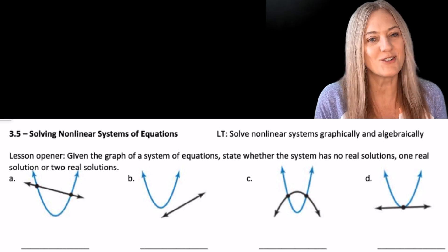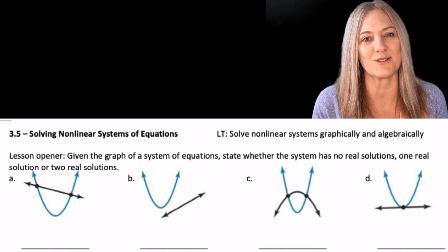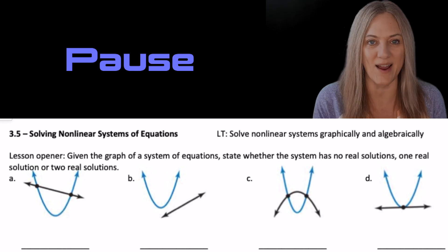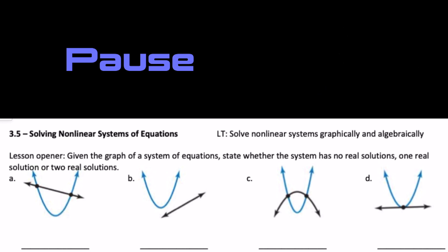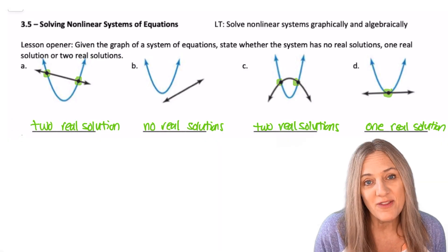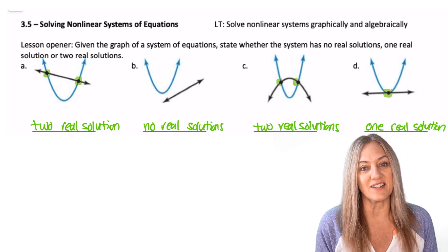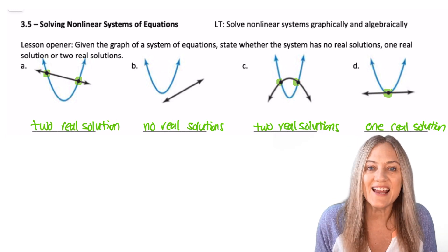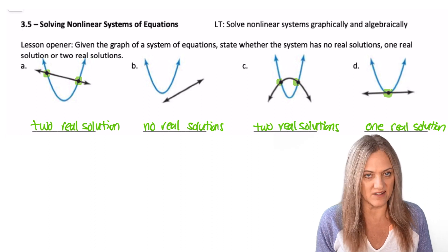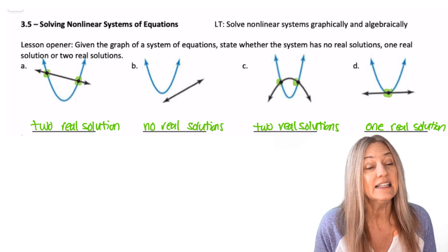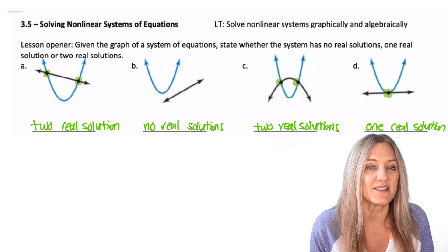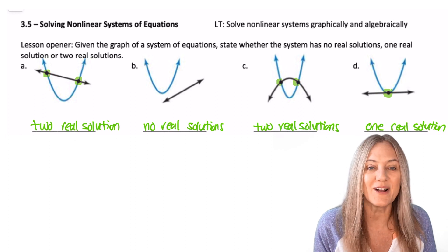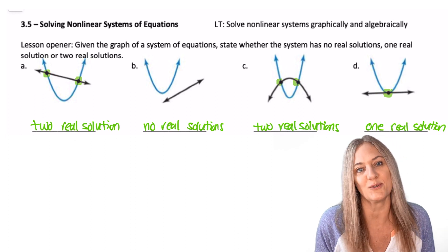One solution, two solutions, or no real solutions? Pause and try. So the first and third have two real solutions. That fourth one only had one real solution, and the second one had no real solutions because the two graphs never intersect. Keep in mind, with different systems of equations and different functions, we can have even more solutions.